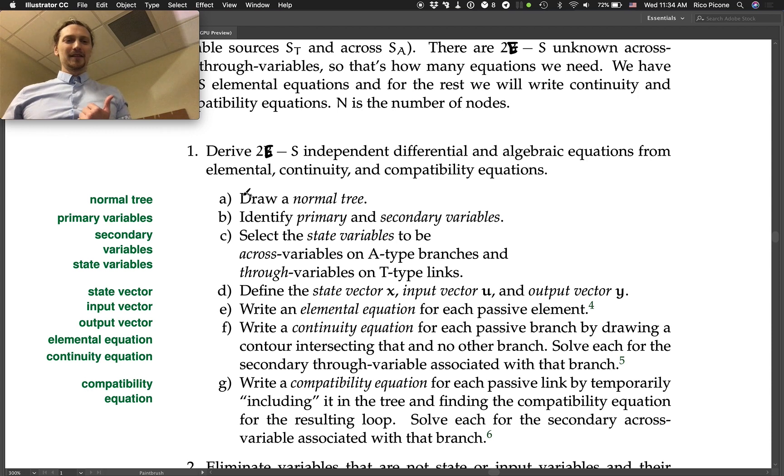Then identify primary and secondary variables, which we learned in the last lecture. Then select the state variables to be across-variables on A-type branches and through-variables on T-type links.